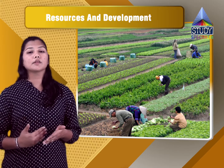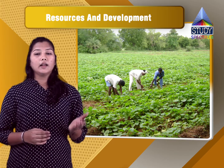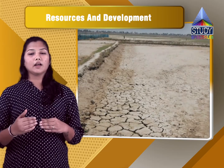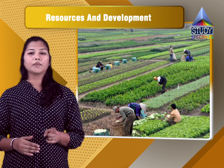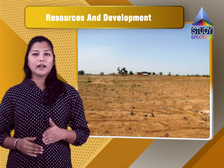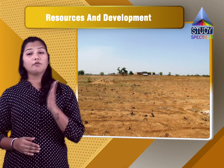The fourth category under land resources is fallow lands, which has two subdivisions: current fallow and other than current fallow. Current fallow means land left without cultivation for one or less than one agricultural year. Other than current fallow is land left uncultivated for the past one to five years. So the difference is: current fallow — less than one year; other than current fallow — one to five years; cultural wasteland — more than five agricultural years.